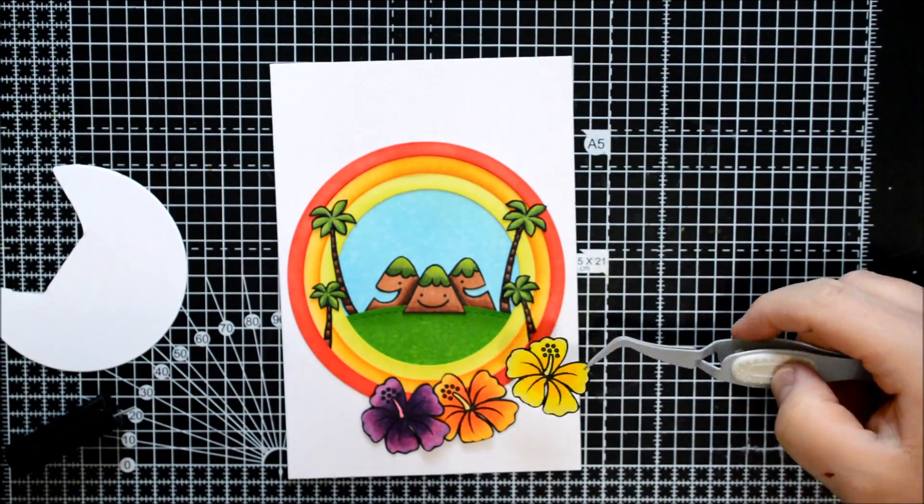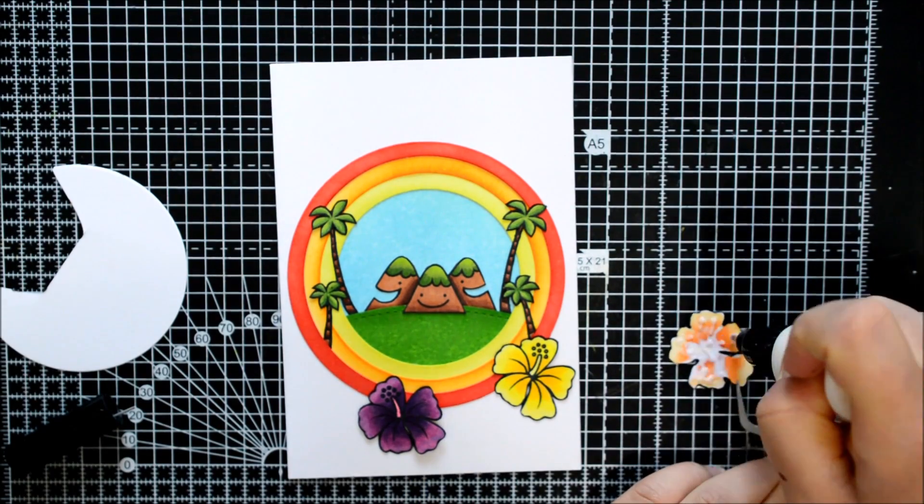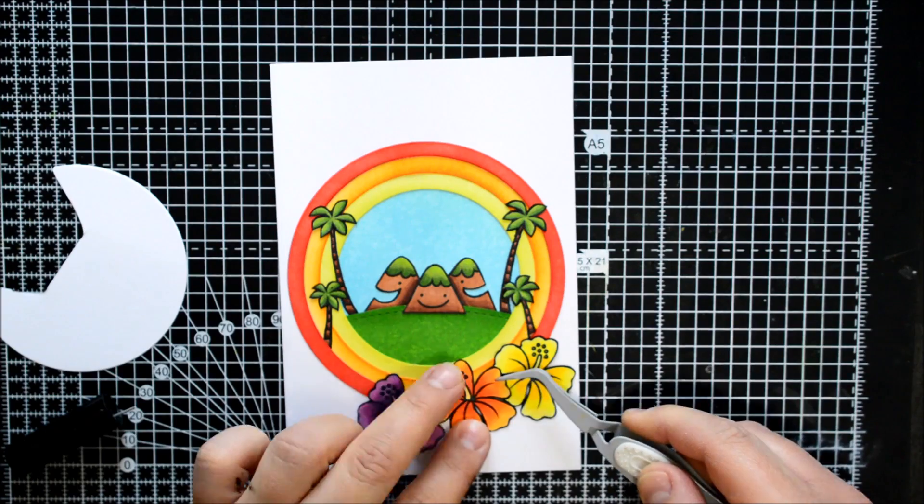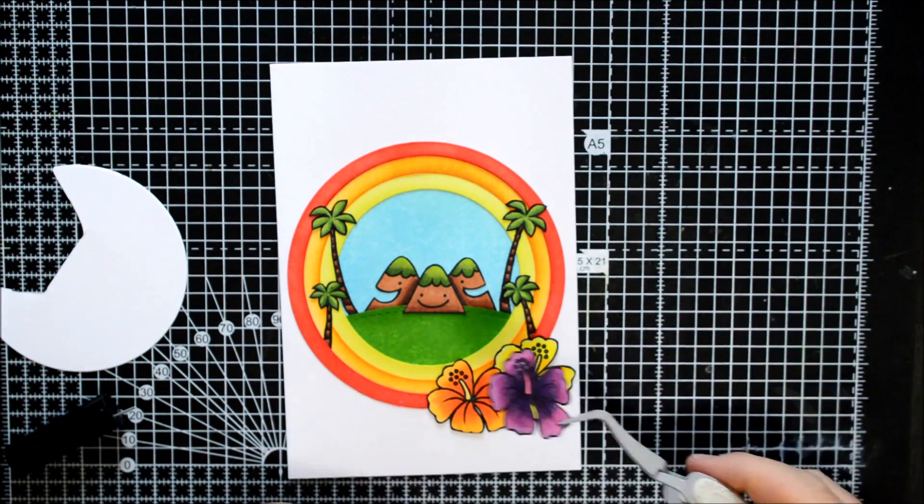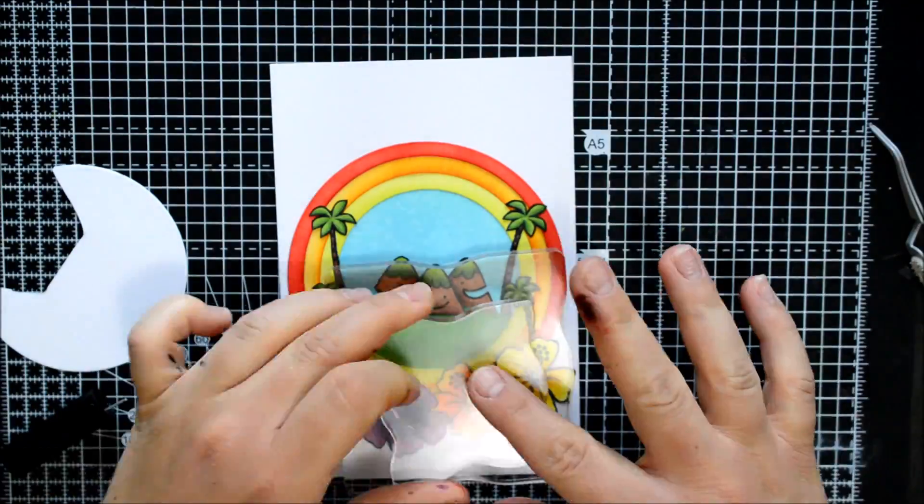When I glue it onto my card front it'll be fine. Then I add my little trees with some Ranger Matte Multi Medium. Same again, it dries quite quickly so I can move ahead with the rest of the card making.